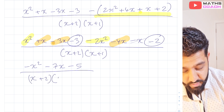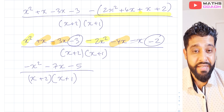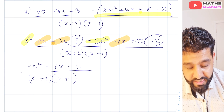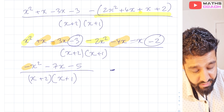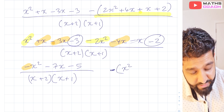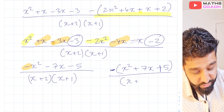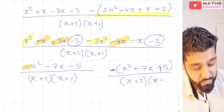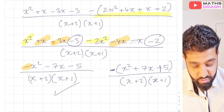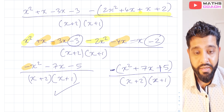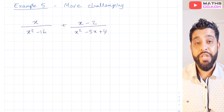Our answer is (minus x squared minus 7x minus 5) over (x plus 2)(x plus 1). If you want to, you can factor out the negative sign and write it as minus(x squared plus 7x plus 5) over (x plus 2)(x plus 1). You don't have to do this, but it's useful practice for A-level mathematics. Either form is acceptable and will earn full marks on an exam. Let's now move on to a more challenging question.